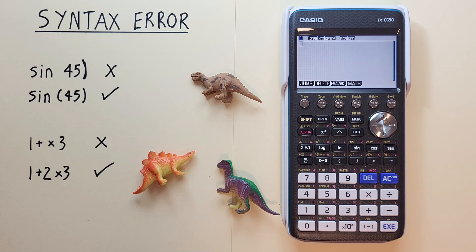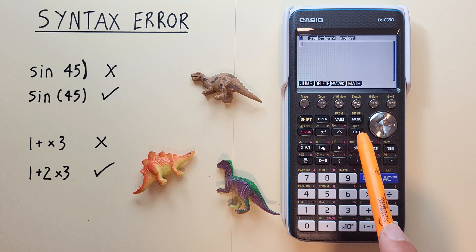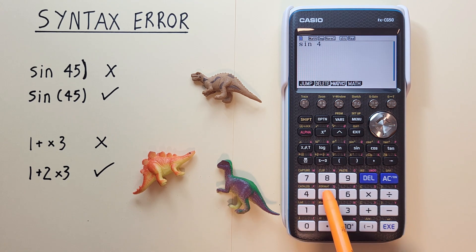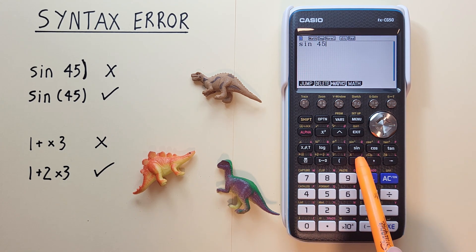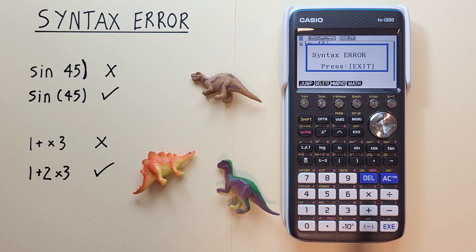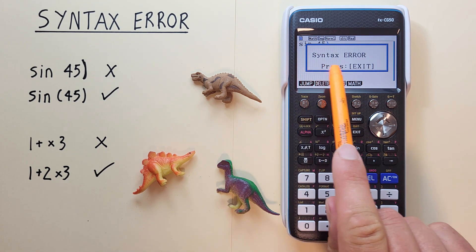An example of this would be if we're trying to find the sine of 45 and enter it like this: sine 45 and then without a left bracket just a right bracket. If we now hit exe we get our syntax error popping up.